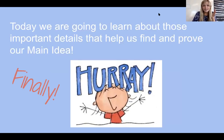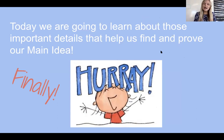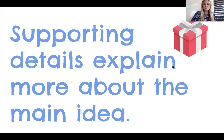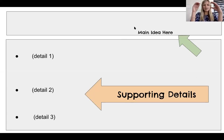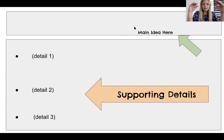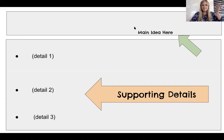Today, finally, we are going to be learning about important details that help us find and prove our main idea. Main idea and details go together so well — they depend on each other. Supporting details explain more about the main idea. Supporting details are more specific things about the main idea. Our main idea is always at the top — it's like that heading, it's what the book is going to be about. Underneath, the supporting details tell us more about that main idea. They all have something in common and will all fall under and fit in with that main idea.